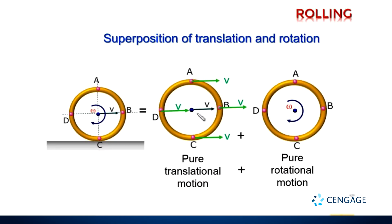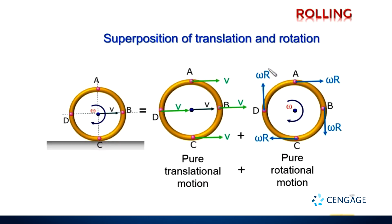In pure rotation, we consider the axis as fixed and the object rotating about that fixed axis. Here the radius of rotation is r, so the tangential velocity is omega r at each point. Now let us make the superposition — superposition is nothing but vector summation. So we need to do the vector summation of velocities due to translation and rotation.